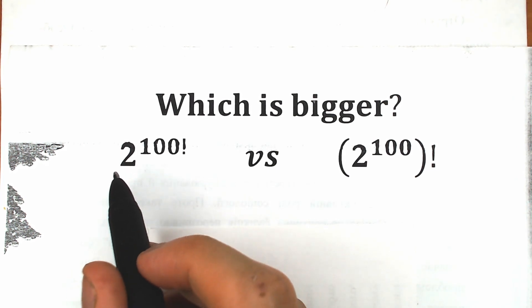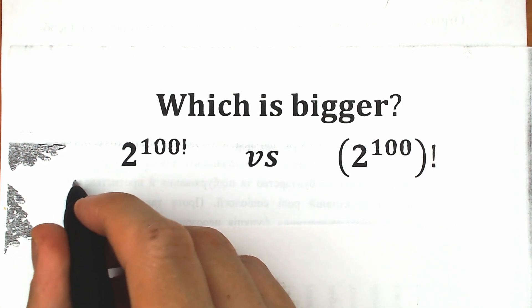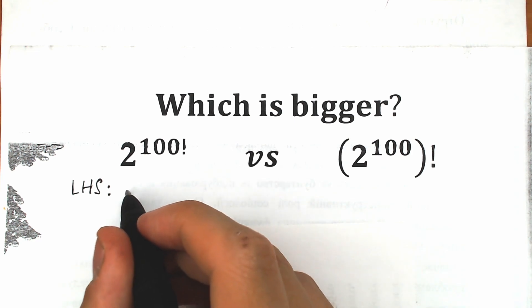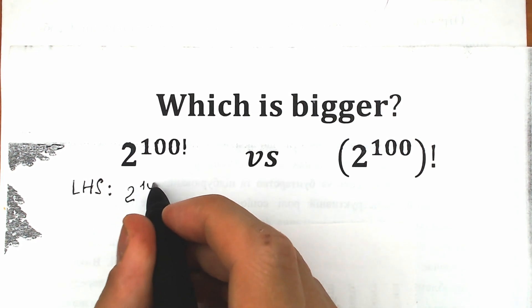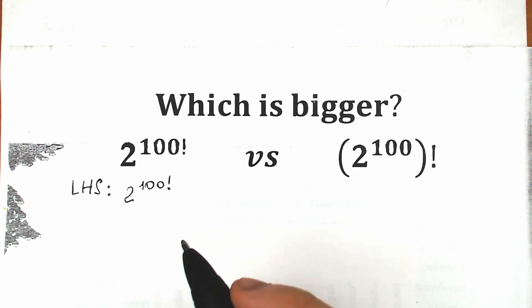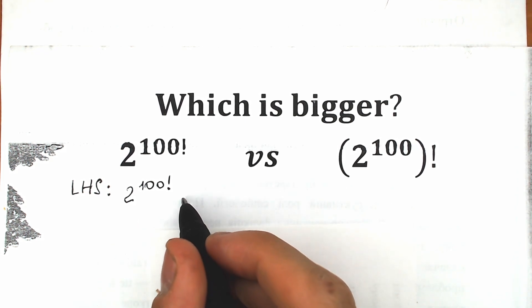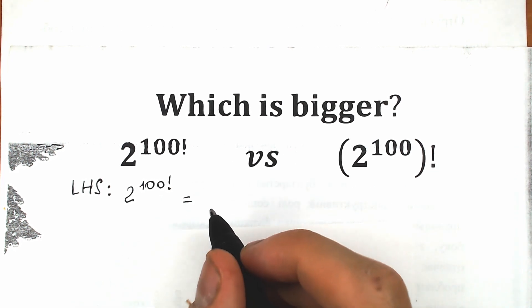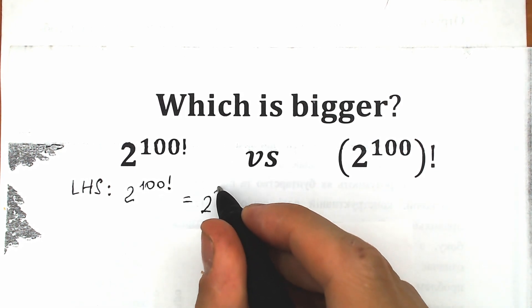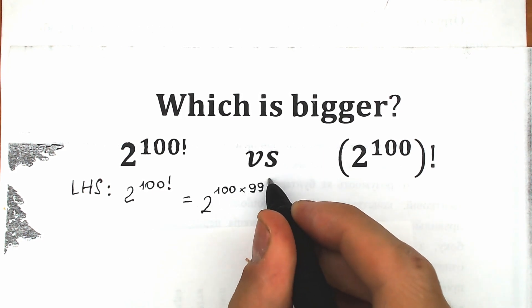Let's look closely at our left-hand side. What do we have right here? We have 2 to the power 100 factorial. This factorial can be rewritten in another way. For example, 4 factorial can be written as 4 times 3 factorial, and in the same way let's write our 100 factorial. We can write it as 2 to the power 100 times 99 factorial.